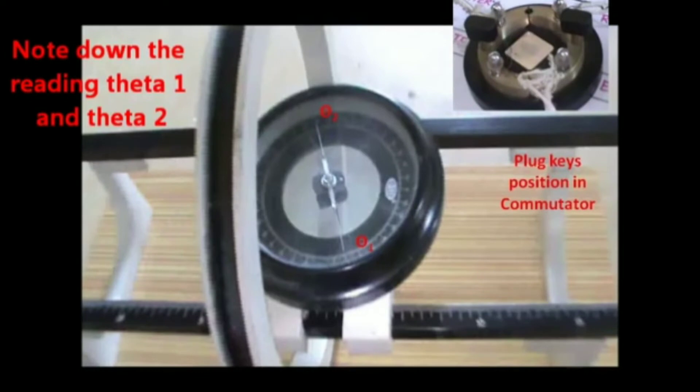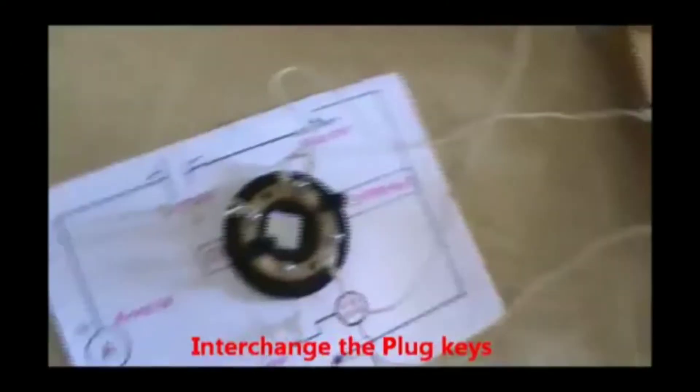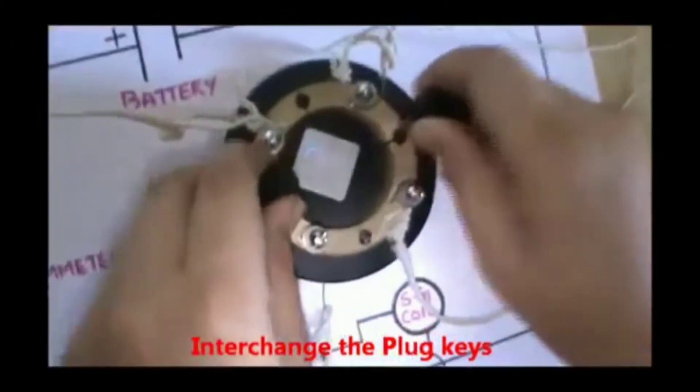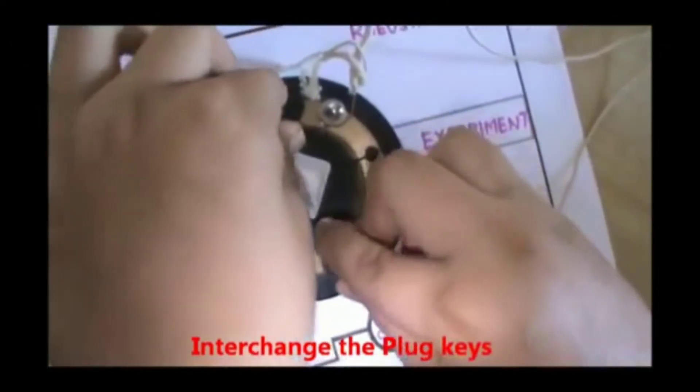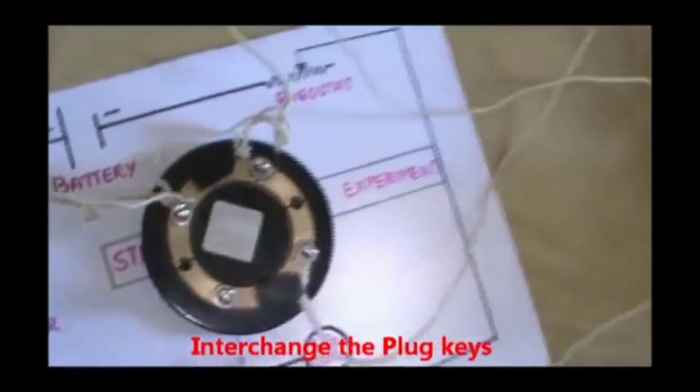Note down the readings theta 1, theta 2, and the plug key position in the commutator you need to interchange. Interchange the plug keys and note down theta 3 and theta 4 also.